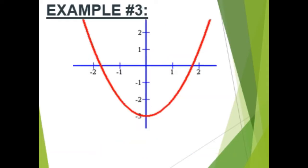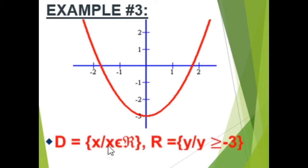Example number three. The graph is a parabola. As you observe, the graph can be extended upward for any values of x and there is always a corresponding value of y which is greater than negative three. The domain of the function is the set of all x such that x is an element of the set of real numbers. And the range of the function is the set of y such that y is greater than or equal to negative three.